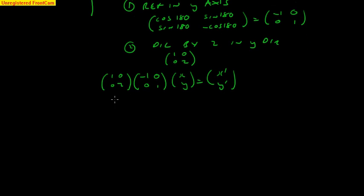So just multiply, and then we get negative 1, and then we get 0, and then we get 0, and then we get 2. So that is the transformation matrix.